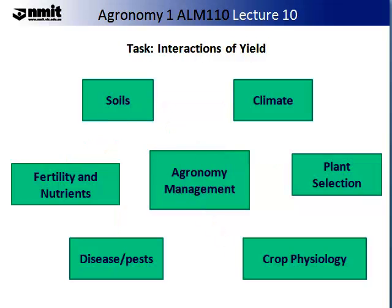Now that you understand the basics of thinking about agronomy inputs as a system, you might want to try the same template but apply it to yield. Yield fits under the crop physiology section, and you would ask yourself: how does management, crop selection, climate, soil, fertility and nutrients, and disease and pests each influence yield? Considering all of these components together and how they interact will reinforce your understanding of the holistic and complicated nature of agronomy.